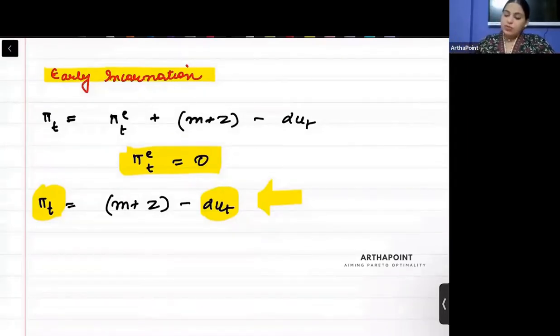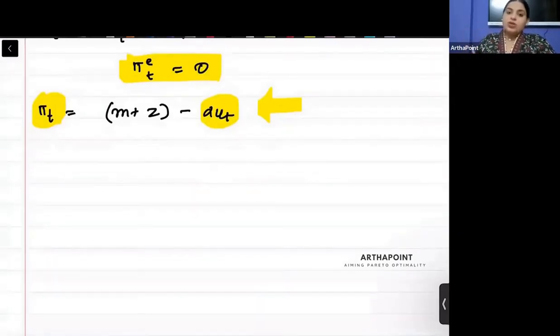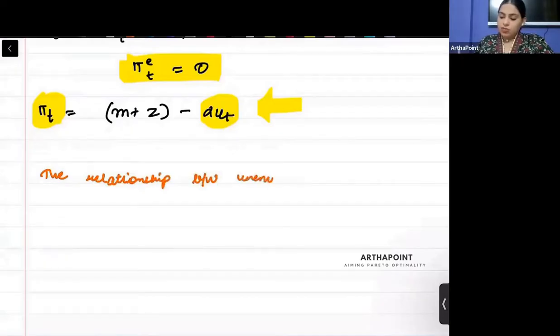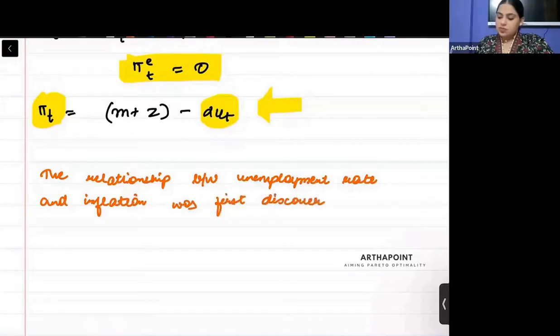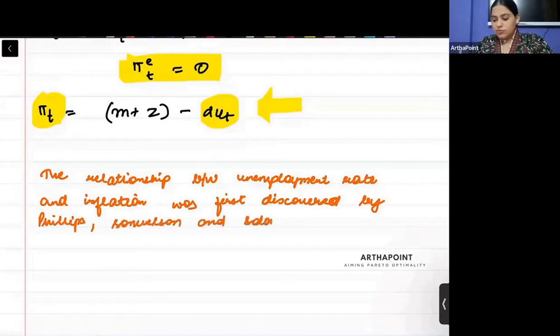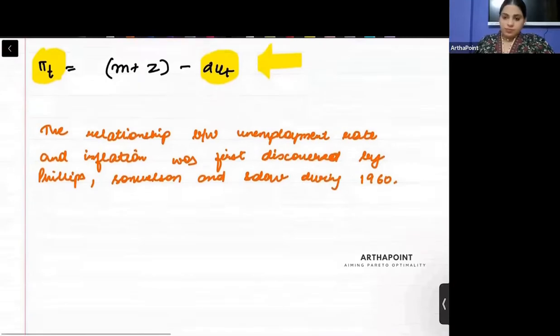Please write down that the relationship between unemployment rate and inflation was first discovered by Phillips, Samuelson and Solow during 1960.